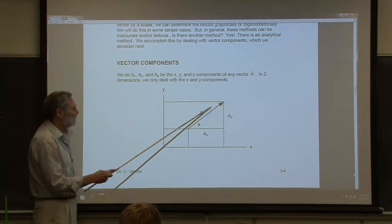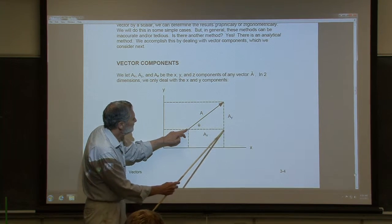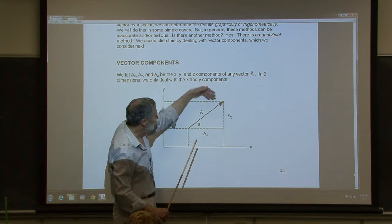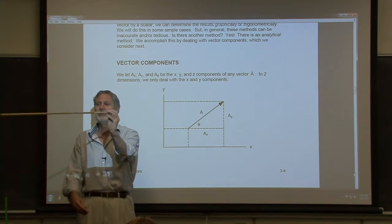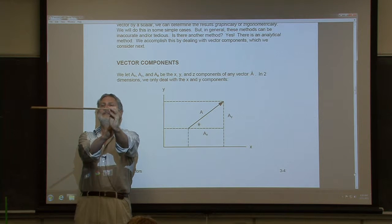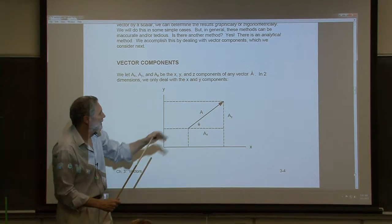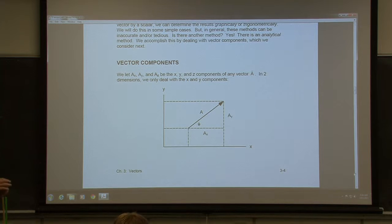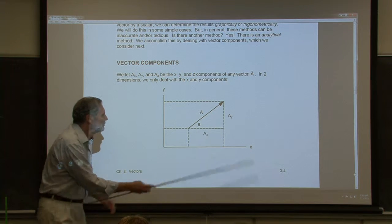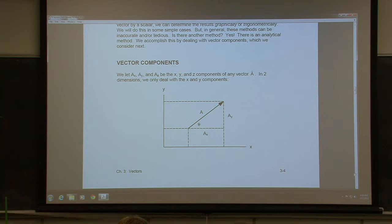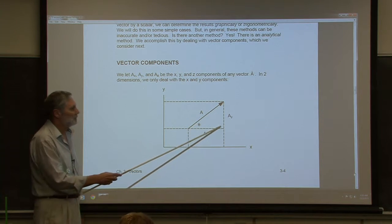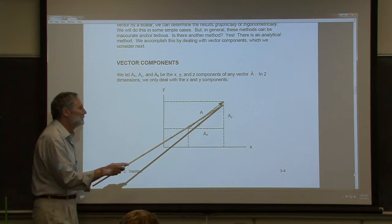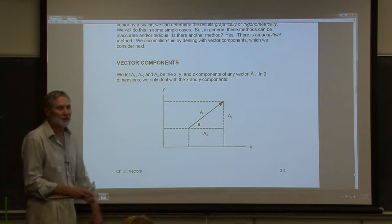Here's a vector A. It has an X component and a Y component. The X component is what you'd see if you projected the vector down onto the X axis. From trigonometry, AX equals A times the cosine of theta, and AY equals A times the sine of theta. Note that these components can be negative, positive, or zero — they are not magnitudes.